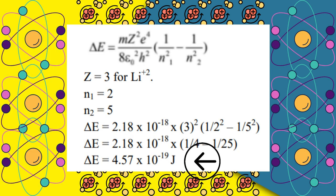ΔE = 2.18 × 10⁻¹⁸ × (3²) × (1/2² - 1/5²) = 2.18 × 10⁻¹⁸ × (1/4 - 1/25) = 4.57 × 10⁻¹⁹ Joules.